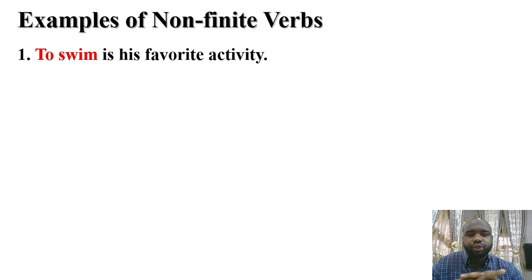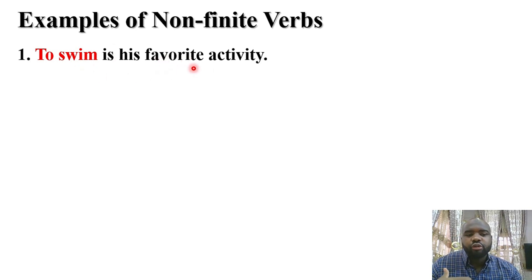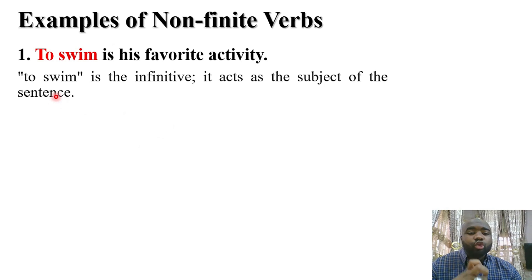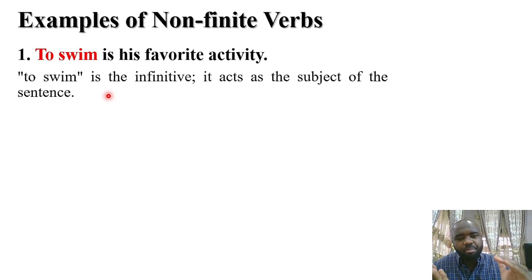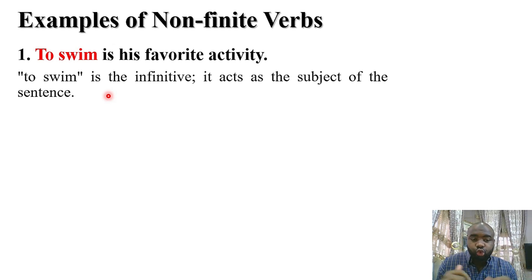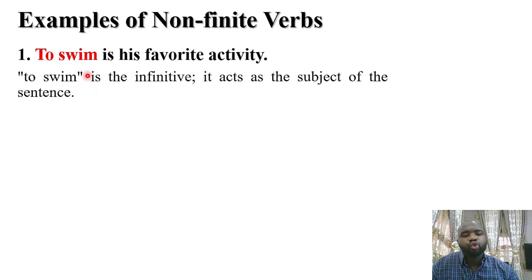Examples of non-finite verbs. First: 'To swim is his favorite activity.' Here 'to swim' is an infinitive. It doesn't show a time frame — no indication of future, present, or past. That is why they are called non-finite; they are not limited to a particular time frame. 'To swim' also acts as the subject of the sentence.